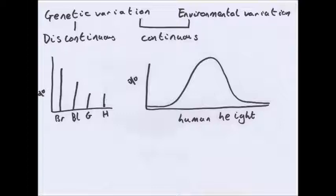For example, eye colour — brown, blue, green, hazel — shows discontinuous variation. You can't have in-betweens; genetically you have one or the other. Human height shows continuous variation and can be caused by both genetic and environmental factors. If you eat a lot you will grow more, but if you have naturally tall parents you will probably be taller than if you have naturally small parents — so it's a bit of both.